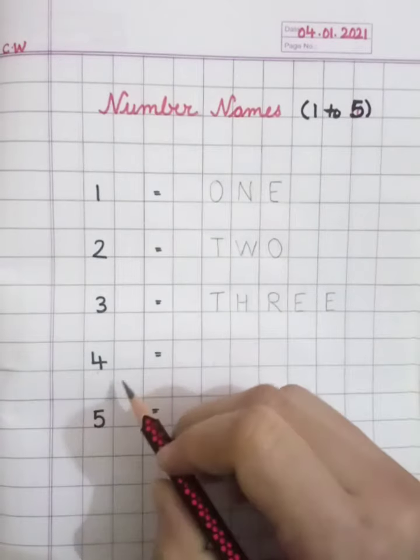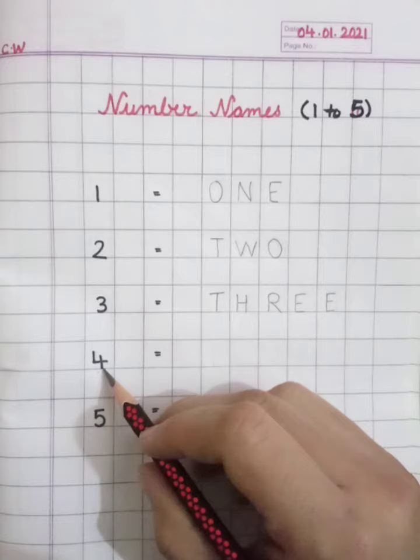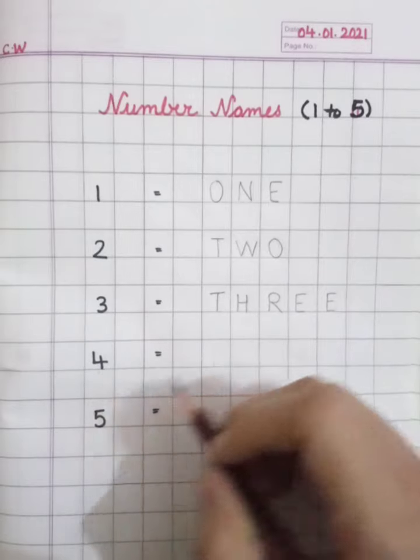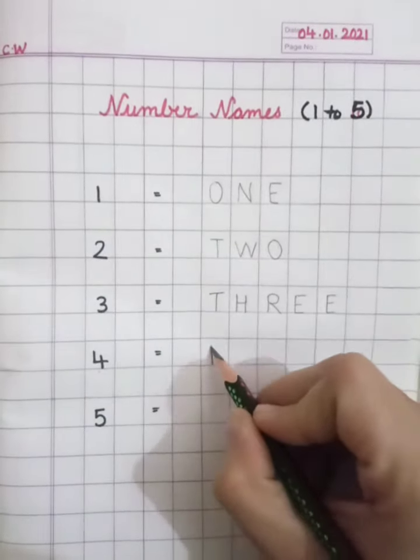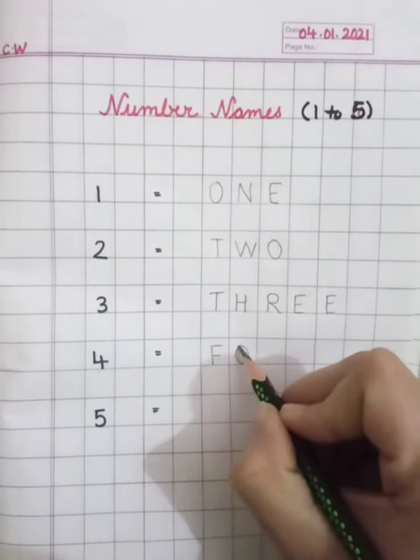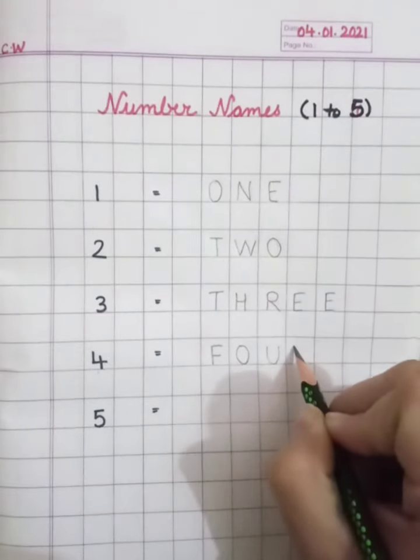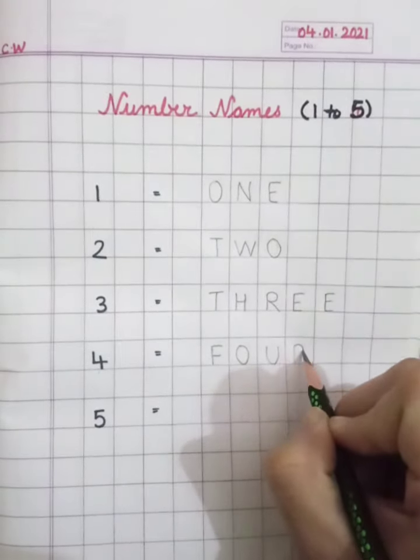Now, look at the fourth number. This is number four. And what is the spelling of four? Here we have to write F, O, U, R, four.